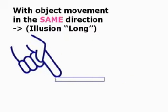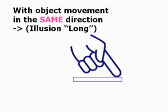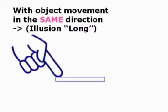However, if the object moves during the hand movement, the assumption leads to an illusory perception of the shape.